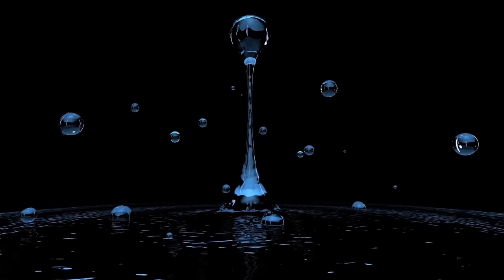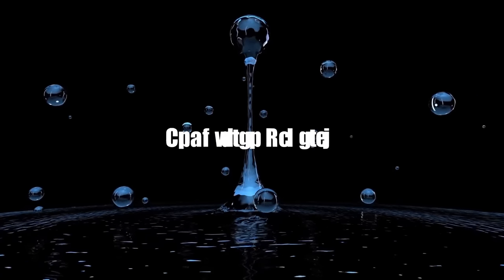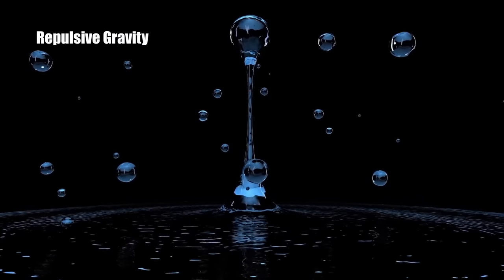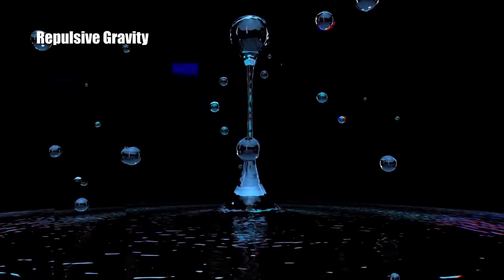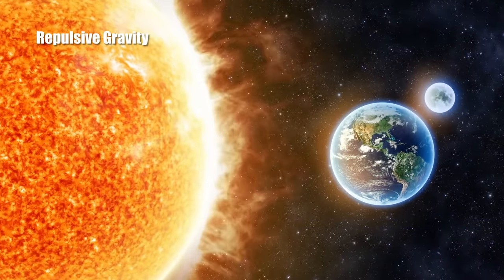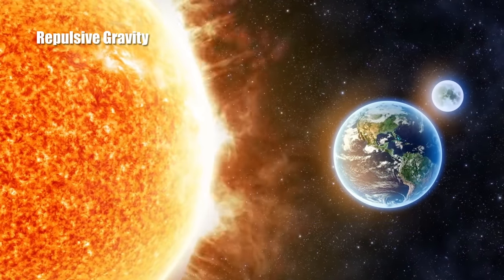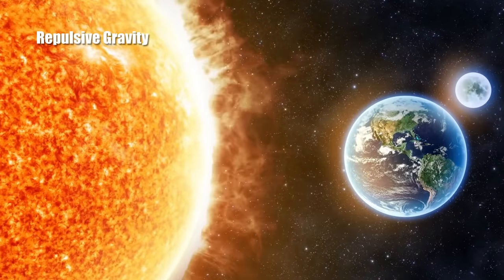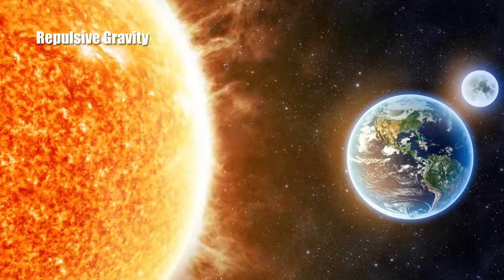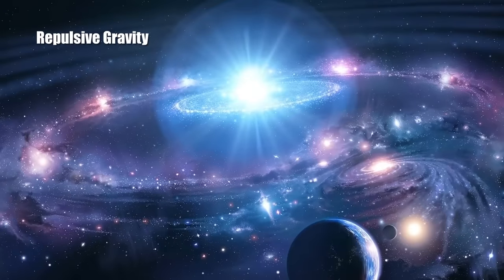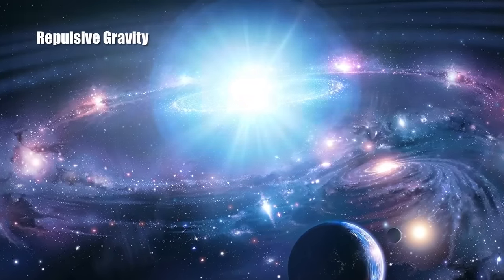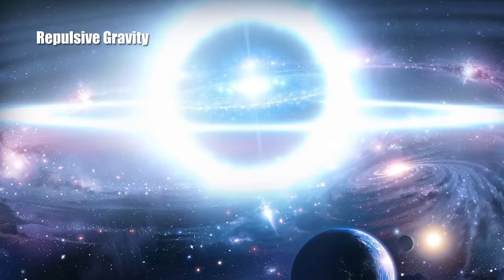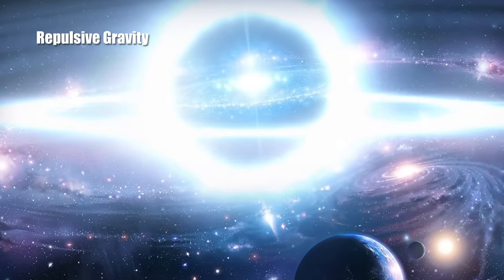But Einstein's equations actually allow gravity to also be repulsive. It can push outward as opposed to just pulling inward. And this is something that we have never experienced because the gravity created by a rocky object like the Earth is always the attractive variety. The gravity created by the sun, again, a compact object, is always the attractive variety. But Einstein's math shows that if you don't have a rocky object that's isolated in space but rather energy that is uniformly spread through a region of space, that kind of entity yields repulsive gravity.